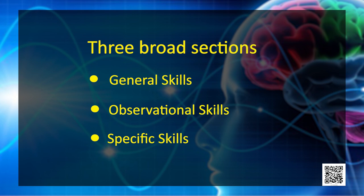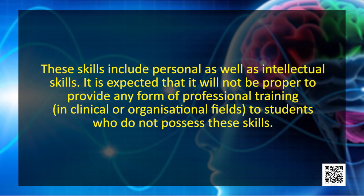The basic skills or competencies identified for becoming an effective psychologist fall into three broad sections: general skills, observational skills, and specific skills. General skills are generic in nature and are needed by all psychologists irrespective of their field of specialization. These skills are essential for all professional psychologists, whether working in clinical or health psychology, industrial or organizational, social, educational, or environmental settings, or acting as consultants.